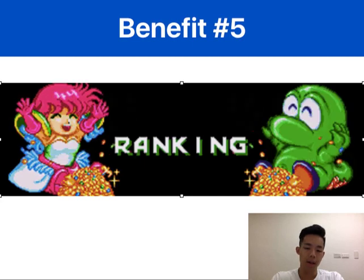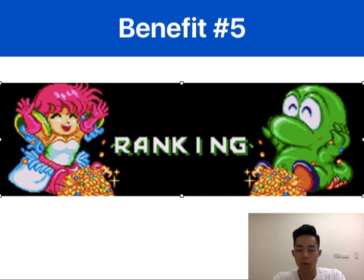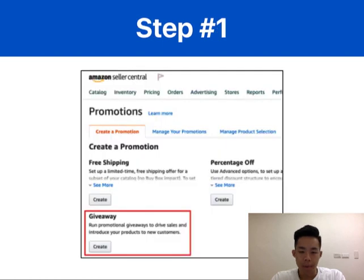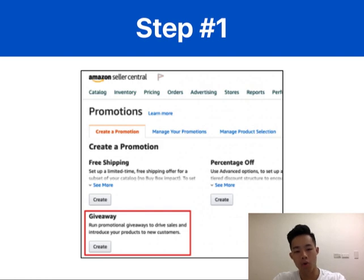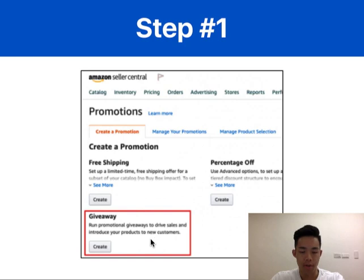Now that you know most of the benefits of running Amazon giveaways, let's dive into the steps to set up your own successful Amazon giveaway. Step one is to create an Amazon giveaway promotion. Log into your Amazon Seller Central account and navigate to the promotions section under the advertising tab. Click on the create button to start a promotional giveaway.